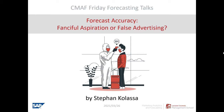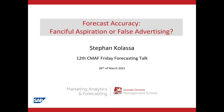We have 2 p.m. and Friday, which means it is time to start our Friday forecasting talks from the Center for Marketing Analytics and Forecasting. Today we have a follow-up webinar from the one two weeks ago with Stefan Kolasa. This time it will be on Forecast Accuracy, with the interesting title of Fanciful Aspiration or False Advertising. Without further ado, Stefan, over to you.